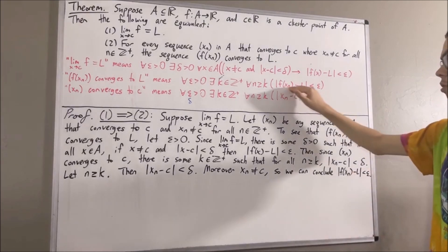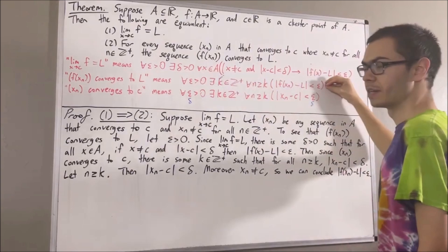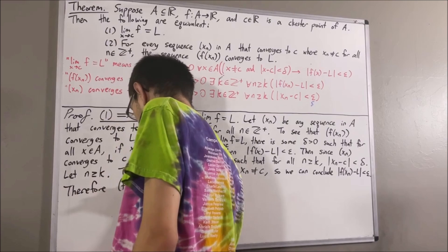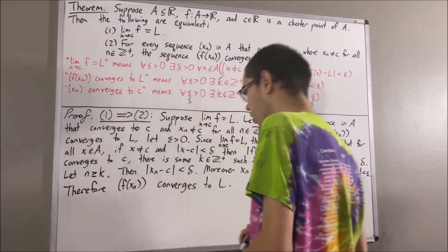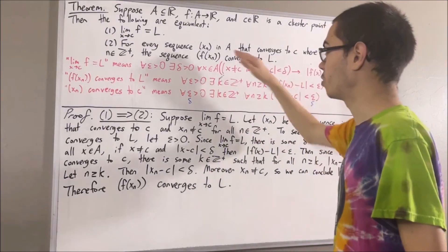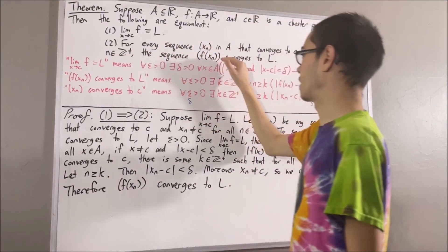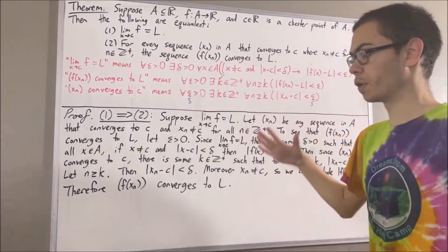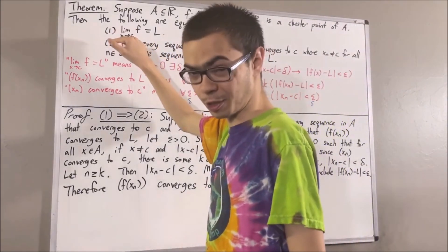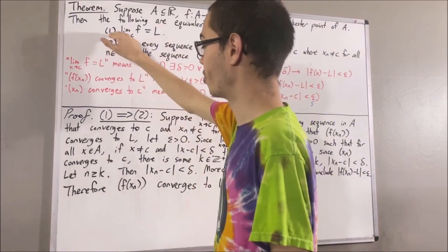That is precisely the inequality we wanted to prove. So we have proven that F of Xn converges to L. Given an arbitrary sequence in A with these properties, the sequence F of Xn converges to L — so we've proven that two is true. We have proven if one is true then two is true. Now we're going to prove the other direction: if two is true, then one is true.